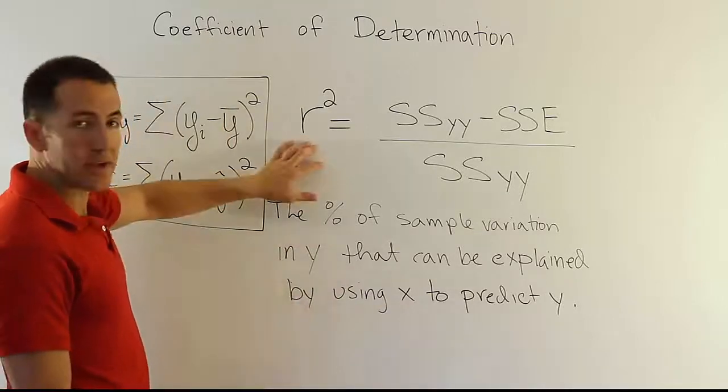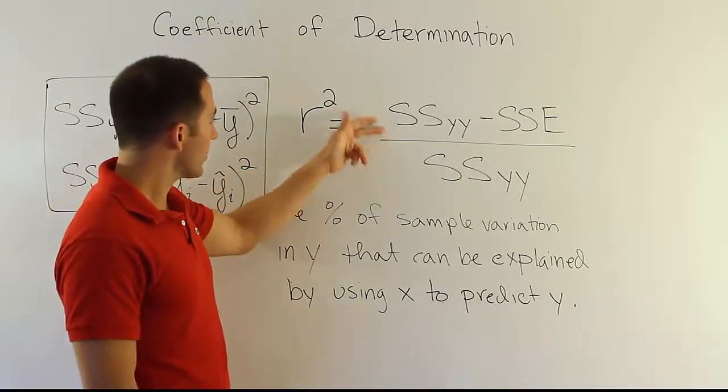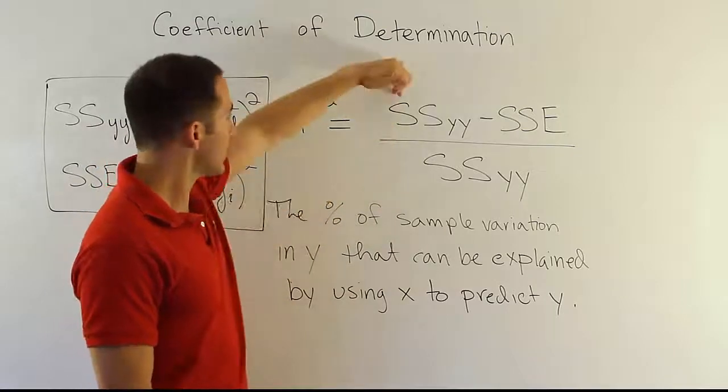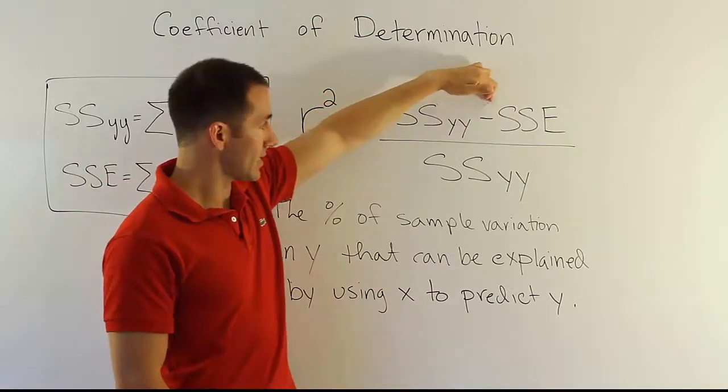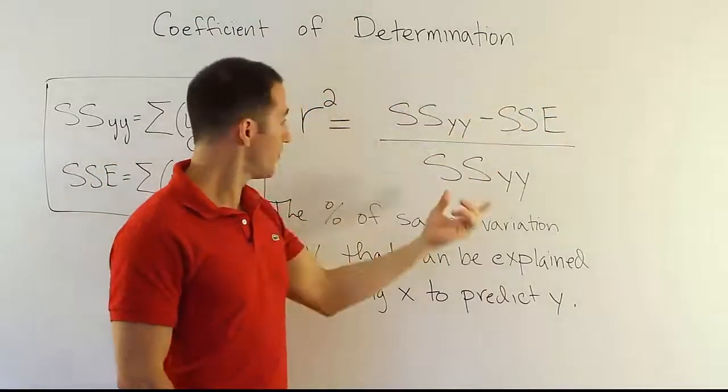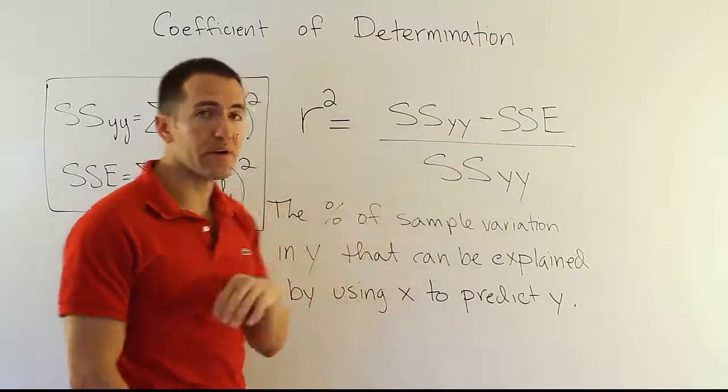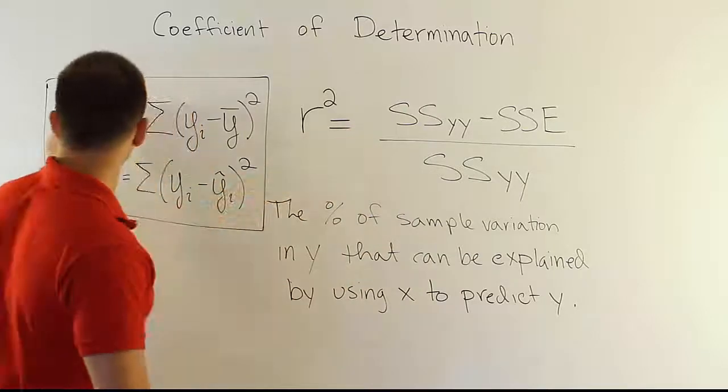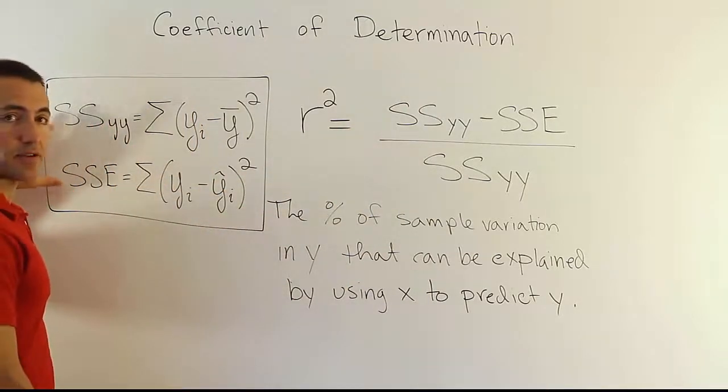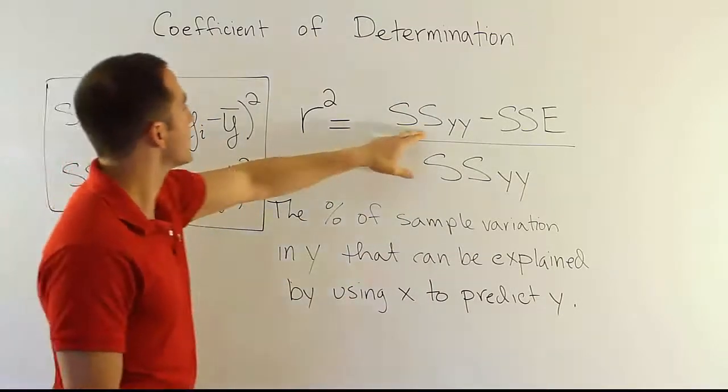So the formula here is basically making a ratio of two quantities. It has the sum of squares for y minus the sum of squares for error divided by the sum of squares for y. So essentially there's a simple ratio here. To understand what the ratio is doing we have to look at this to make some interpretation. So what is SSYY?